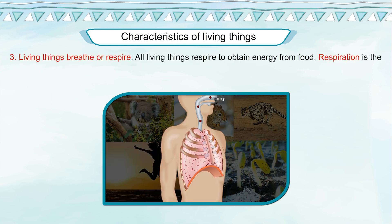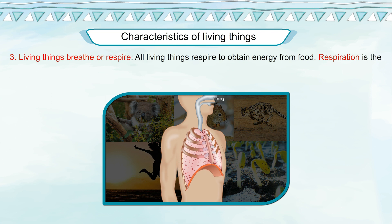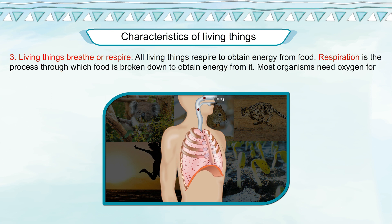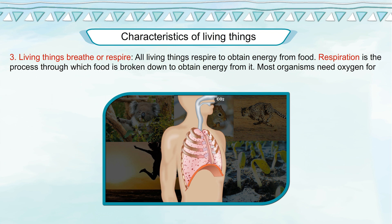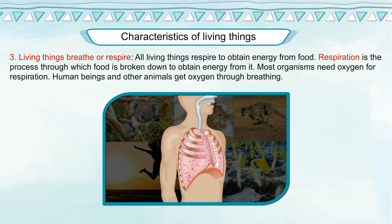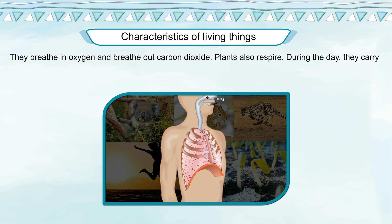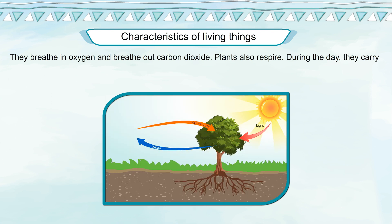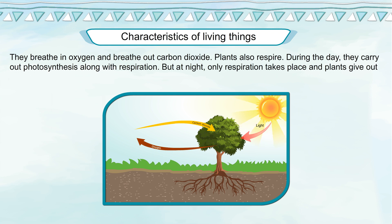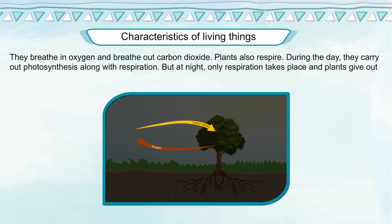Living Things Breathe: All living things respire to obtain energy from food. Respiration is the process through which food is broken down to obtain energy from it. Most organisms need oxygen for respiration. Human beings and other animals get oxygen through breathing — they breathe in oxygen and breathe out carbon dioxide. Plants also respire. During the day, they carry out photosynthesis along with respiration. But at night, only respiration takes place and plants give out carbon dioxide.